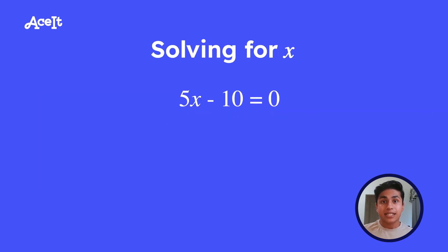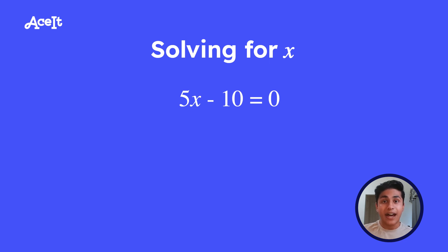Let's say we're trying to solve for x. The first thing we should do is try to isolate the variable x. We have 5x minus 10, so let's try to move the 10 to the other side of the equation to isolate that 5x. To move something to the other side of the equation, you have to perform the opposite operation. So since we have minus 10, we're going to add 10 on both sides, which gives us 5x is equal to 10.